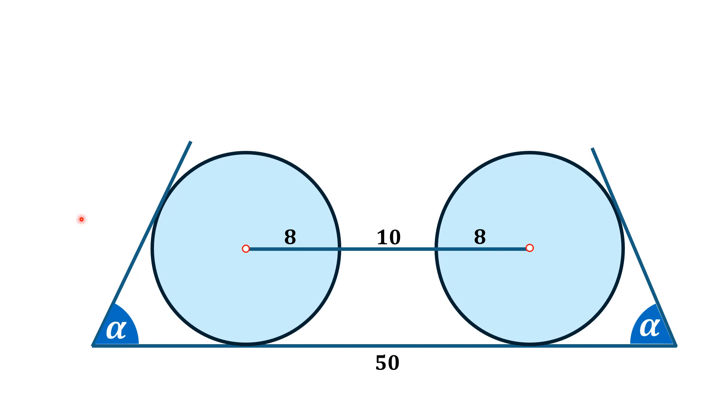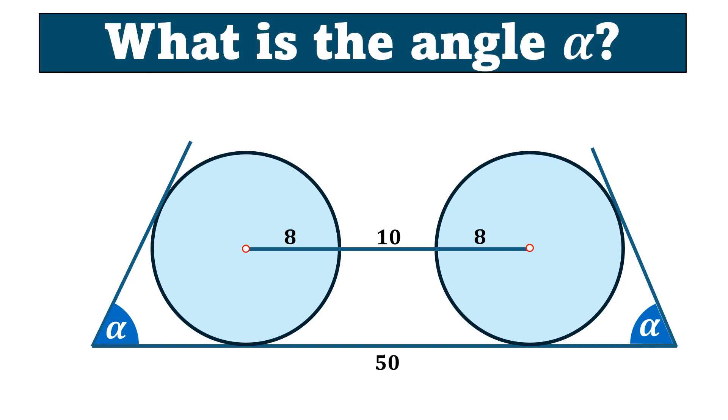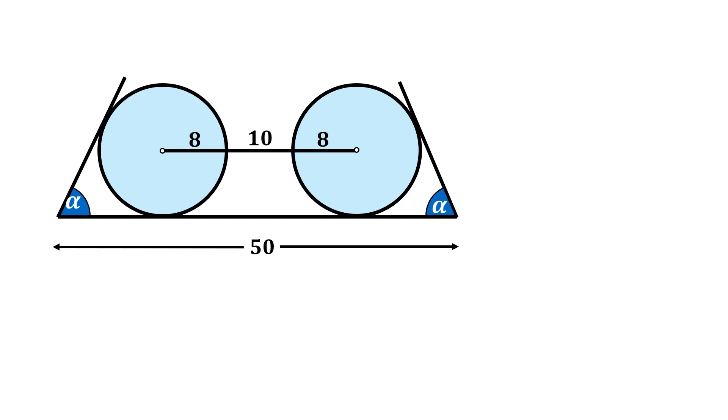Let's move towards the solution. We can see that this figure is symmetric in all manners. If we draw a vertical line from the center of the circle to the tangent point, this length is also 8 units because this is a radius of the circle.